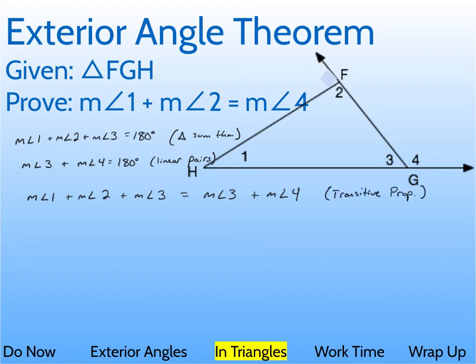Alright, now we're really close to getting it because remember what we want is angle 1 plus angle 2 equals angle 4, and look, we have 1 plus 2 plus 3 equals 3 plus 4. Wow, there's a 3 on both sides, so what we can do since this is an equation is we can subtract the measure of angle 3 on both sides and those cancel.